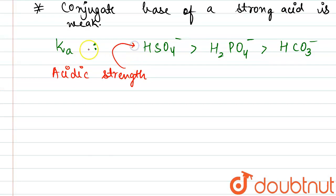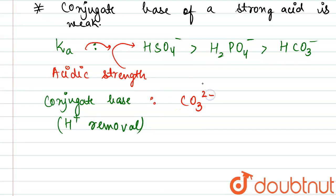Now if we observe the conjugate base, conjugate base of a stronger acid will be weak in nature. We know that conjugate base is formed by H+ removal. So that order will be reversed here. It would be maximum basic for CO3²⁻.